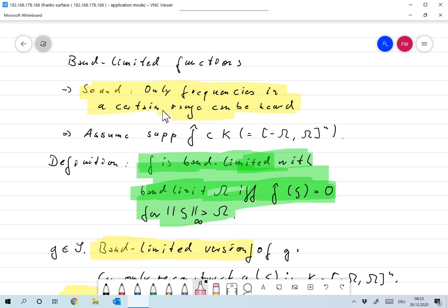And so for band-limited functions, we always assume that the support of the Fourier transform of that function is in some compact set, and usually that compact set is minus omega to omega to the n. And that gives rise to the following definition.